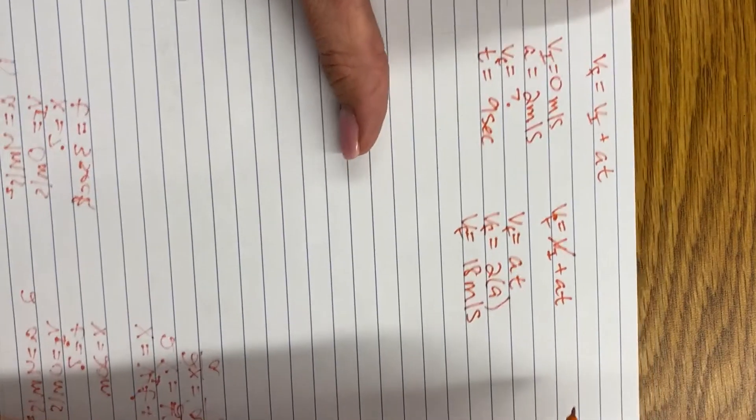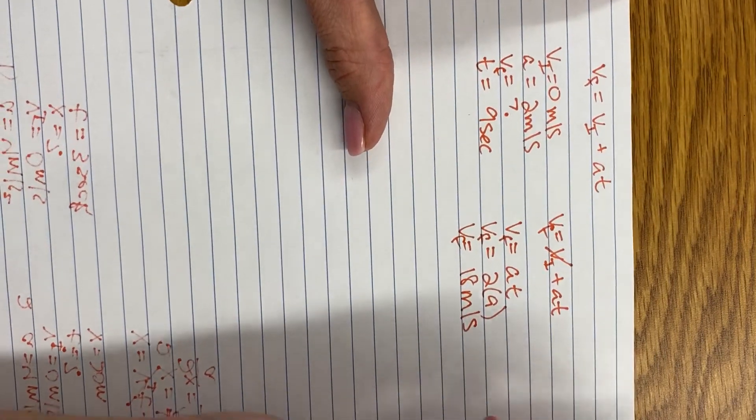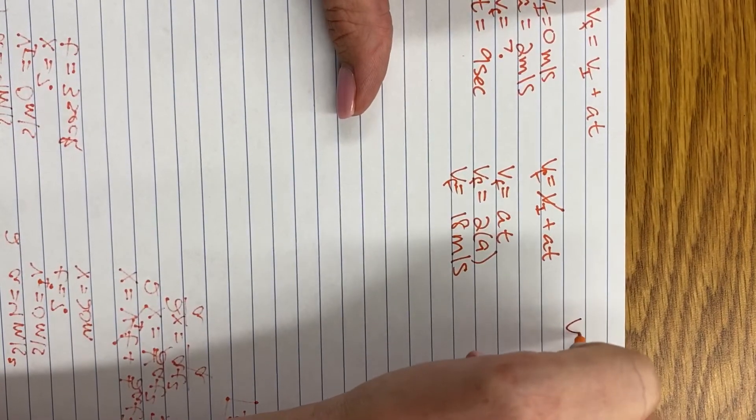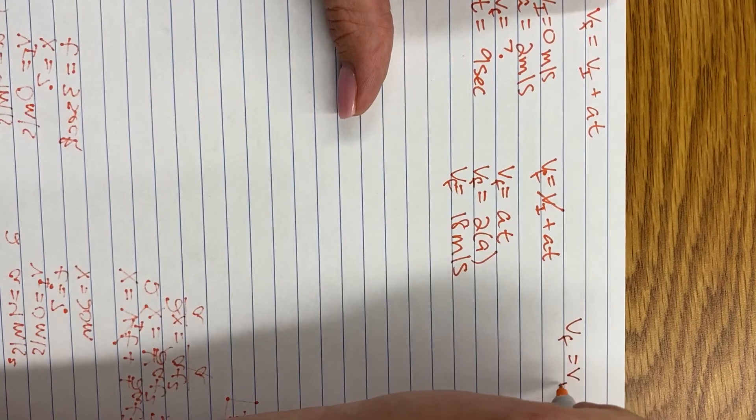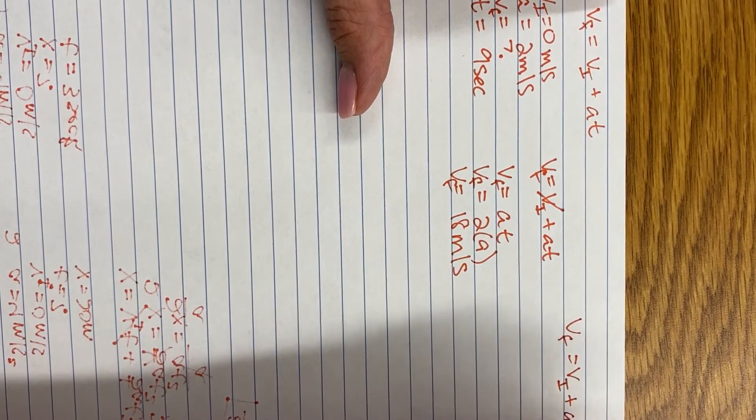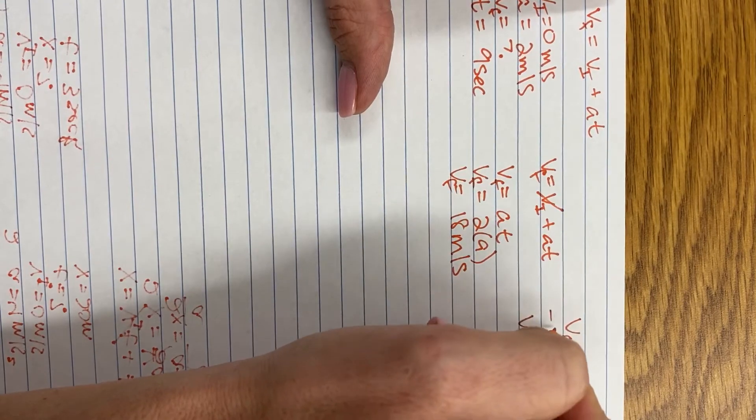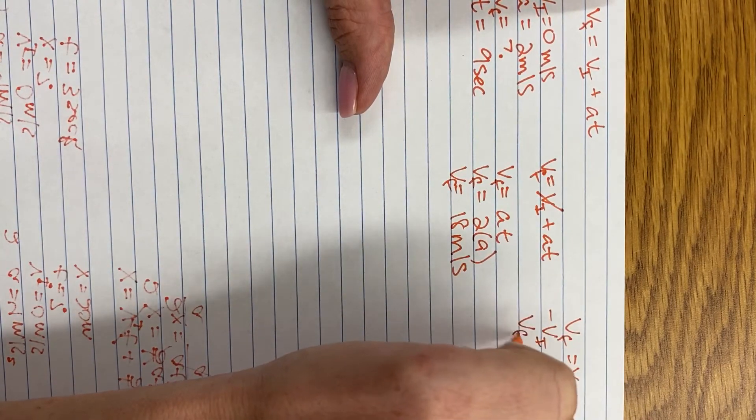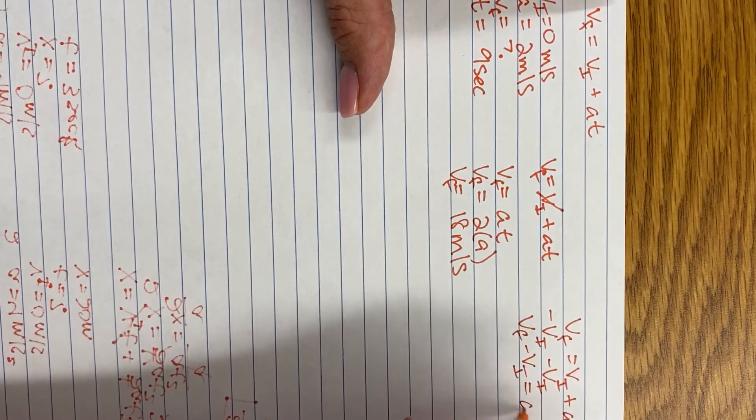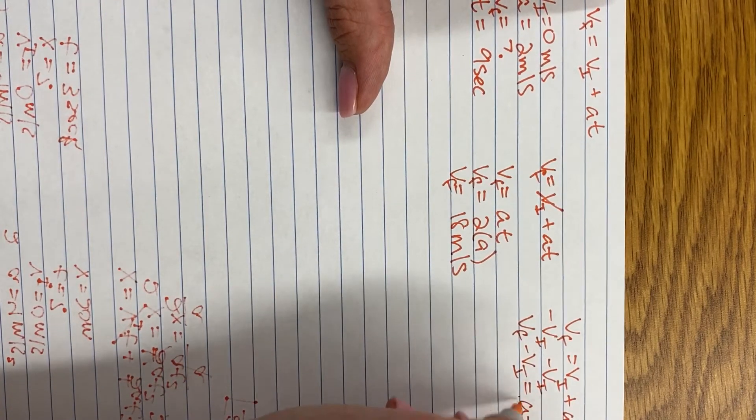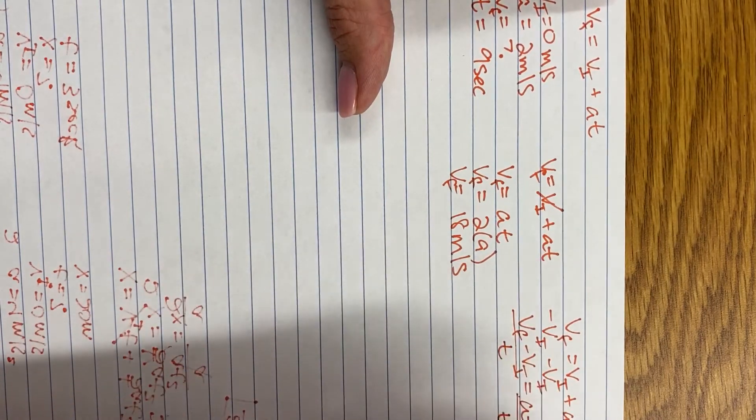This one we rearranged before, so if you wanted to find acceleration, you would subtract Vi from both sides. So it would be Vf minus Vi is equal to At. Then if you wanted acceleration by itself, you would just divide both sides by time.